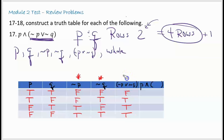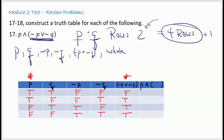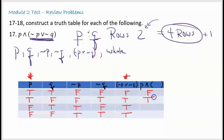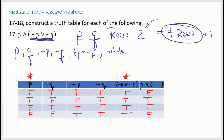For the last column, I'm looking at P and the parentheses column. An AND statement requires both truth values to be true; otherwise it's false. So: true AND false is false, true AND true is true, false AND true is false, false AND true is false. So only the second row — where P is true and Q is false — gives a true statement. Any other combination gives false. That's our truth table for this statement.